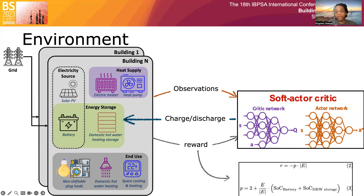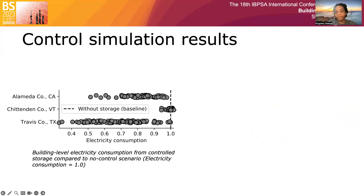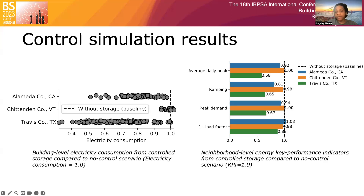Our results show that all buildings in California and Texas are able to reduce their energy consumption from the grid compared to the baseline. On average, buildings in California and Texas neighborhoods reduce energy drawn from the grid by 19% and 30% respectively, whereas only 14 of 43 buildings in Vermont perform better than the baseline. At the neighborhood level, ramping is most improved on average across the three neighborhoods. California and Texas reduce peak load as indicated by average daily peak and peak demand metrics, but these are unchanged in Vermont. Load factor is reduced by 2% and 12% in Vermont and Texas, but increases by 3% in California.